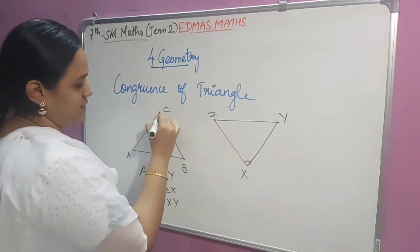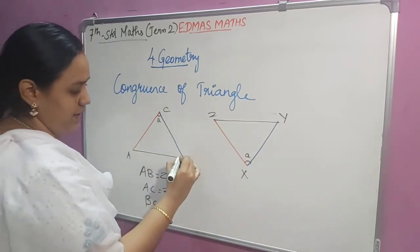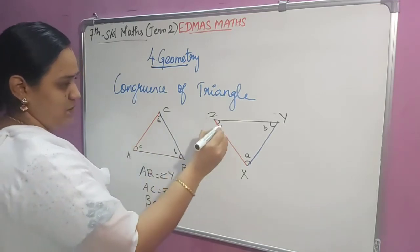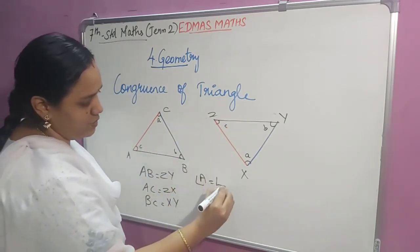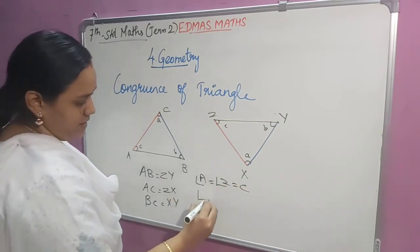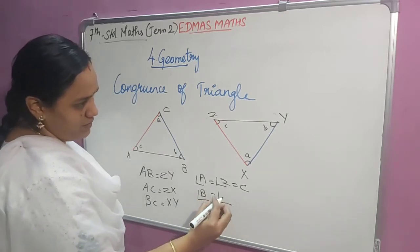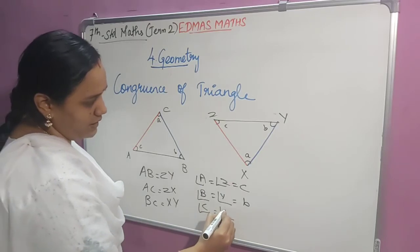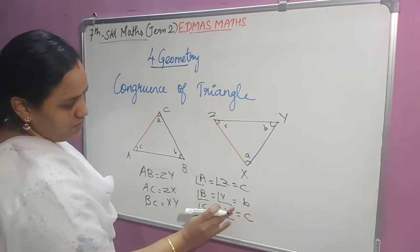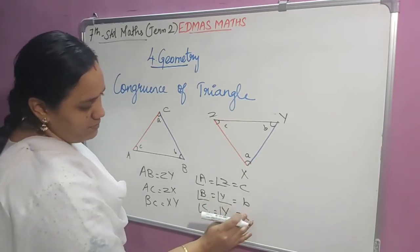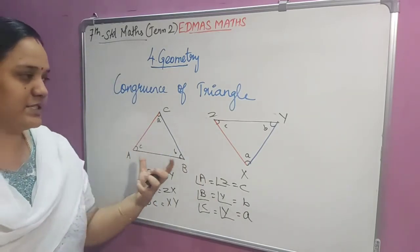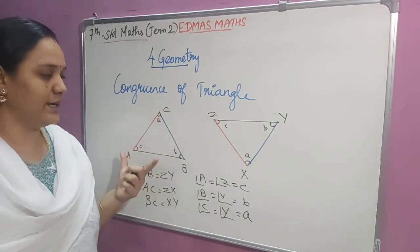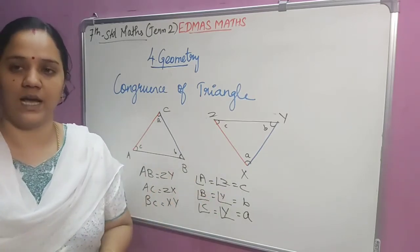Angle A of triangle ABC is equal to angle Z of triangle ZYX, and angle B is equal to angle Y. So in these two triangles, the corresponding sides are equal and the corresponding angles are equal. So we can say that these two triangles are congruent to each other.